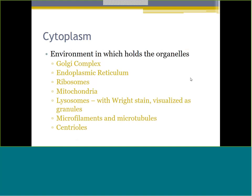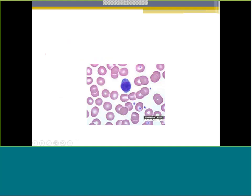Now we'll go to the cytoplasm of the cell. The cytoplasm contains all your organelles - your Golgi complex, endoplasmic reticulum, ribosomes, mitochondria, and so on. Every cell we're going to learn to identify in hematology will have different amounts of cytoplasm. We use how much cytoplasm is present and the color of it to help identify cells. Cytoplasm is anything around the nucleus - this cell here doesn't have a ton of cytoplasm; the nucleus takes up almost the entire cell.